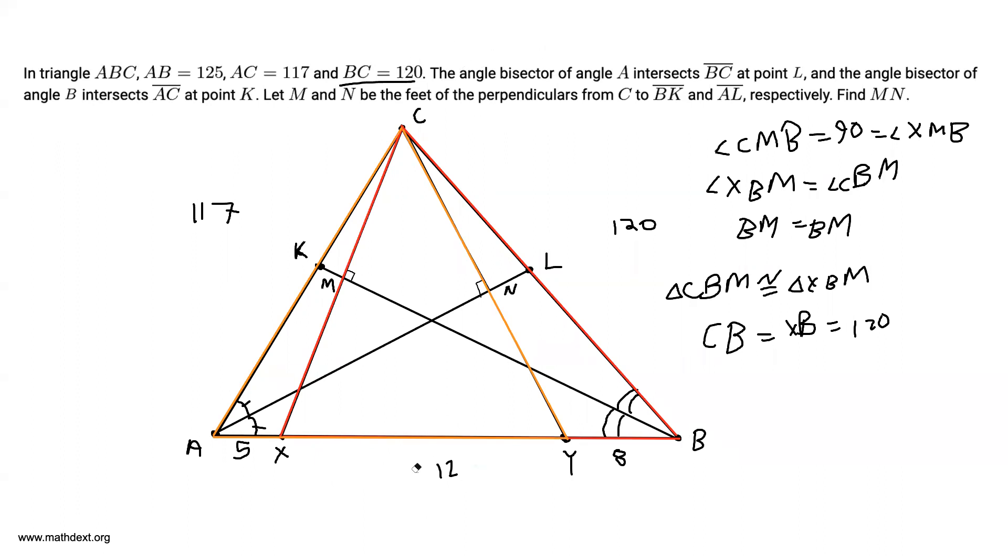So we have AX is 5, BY is 8, which means that XY over here, this segment, has length 125 minus 5 minus 8, which is 112. And we also know that M is the midpoint of CX.